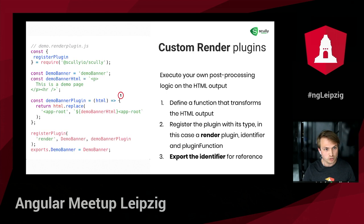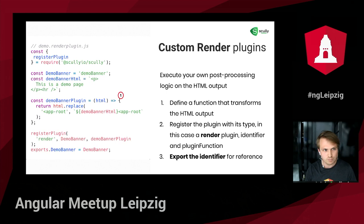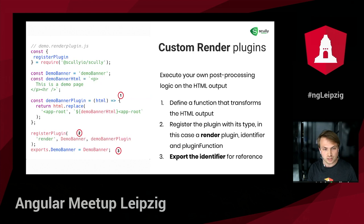To demonstrate this, we'll create a simple custom render plugin that executes our own post-processing logic on the HTML output. This example render plugin simply adds a banner to all generated pages. We define a function that takes the generated HTML and adds a paragraph to the top of the page. We register the plugin with the correct render type, its identifier, and the render function itself. Exporting the identifier makes it available in the Scully config file, just as we did with the router plugin.